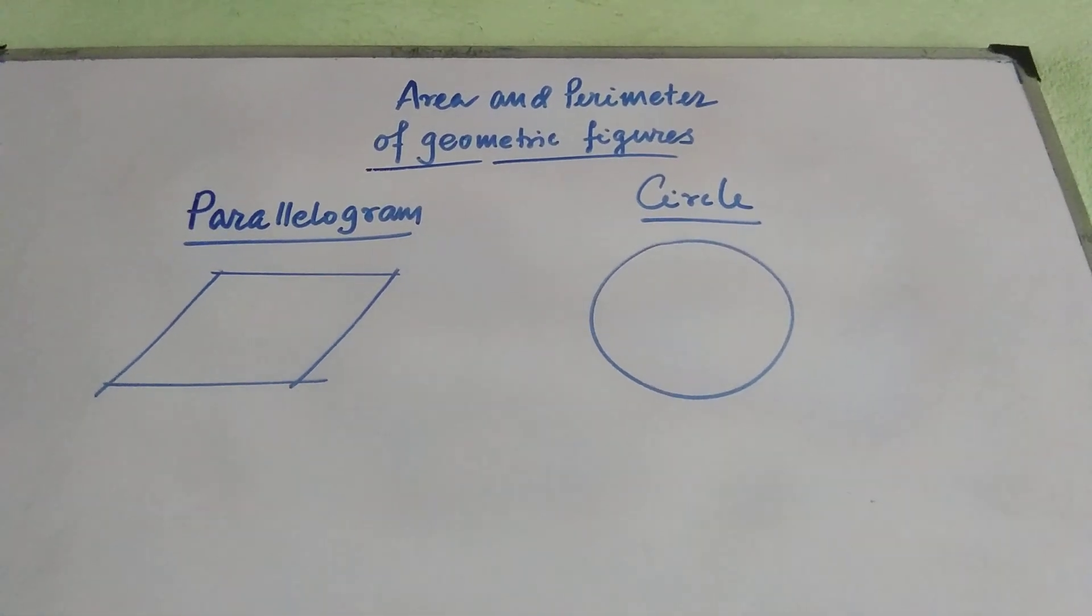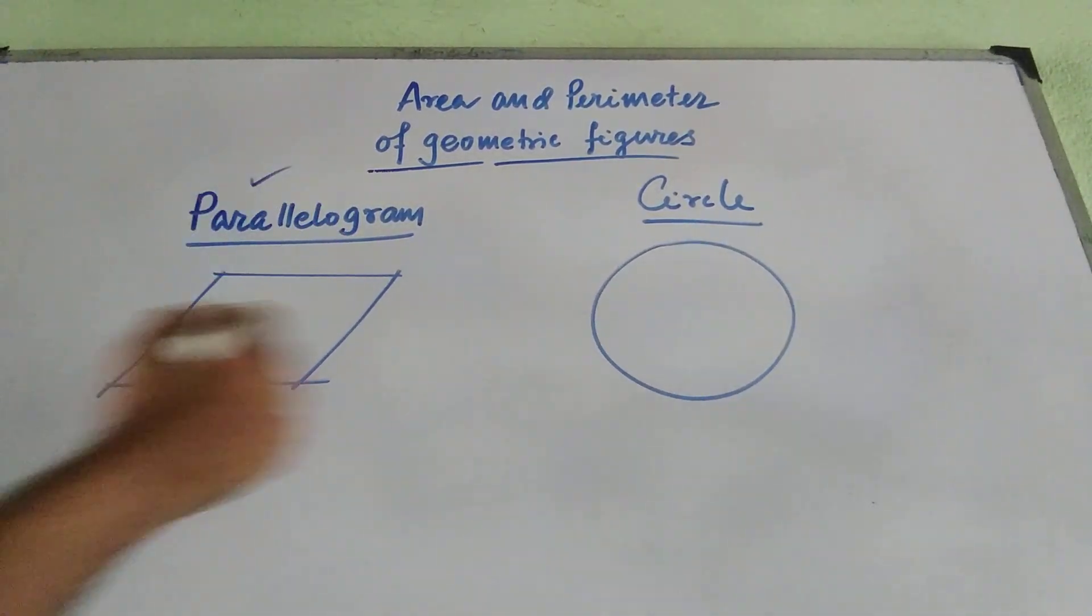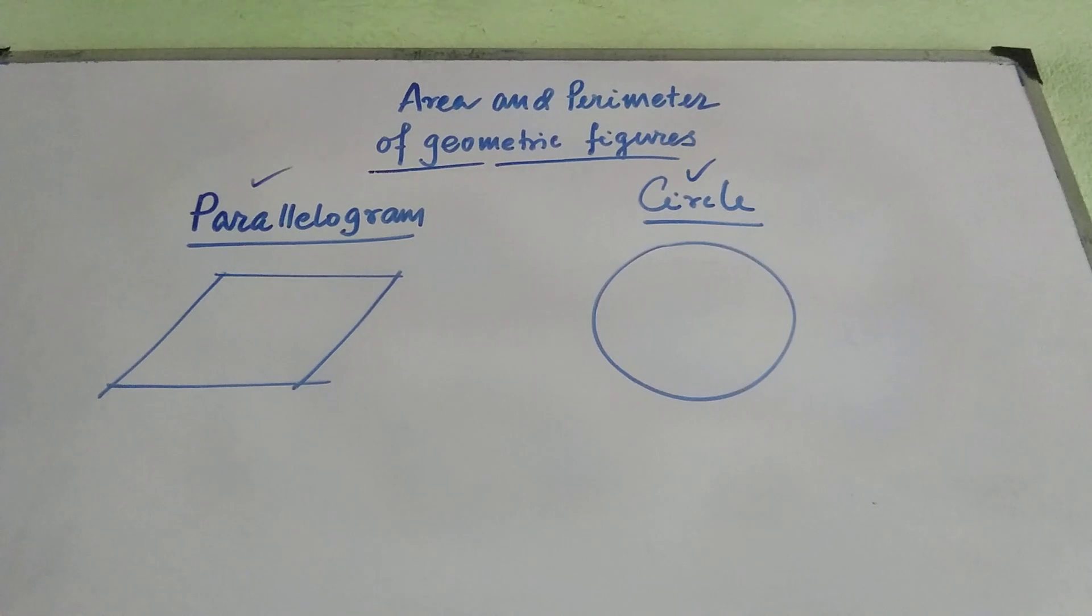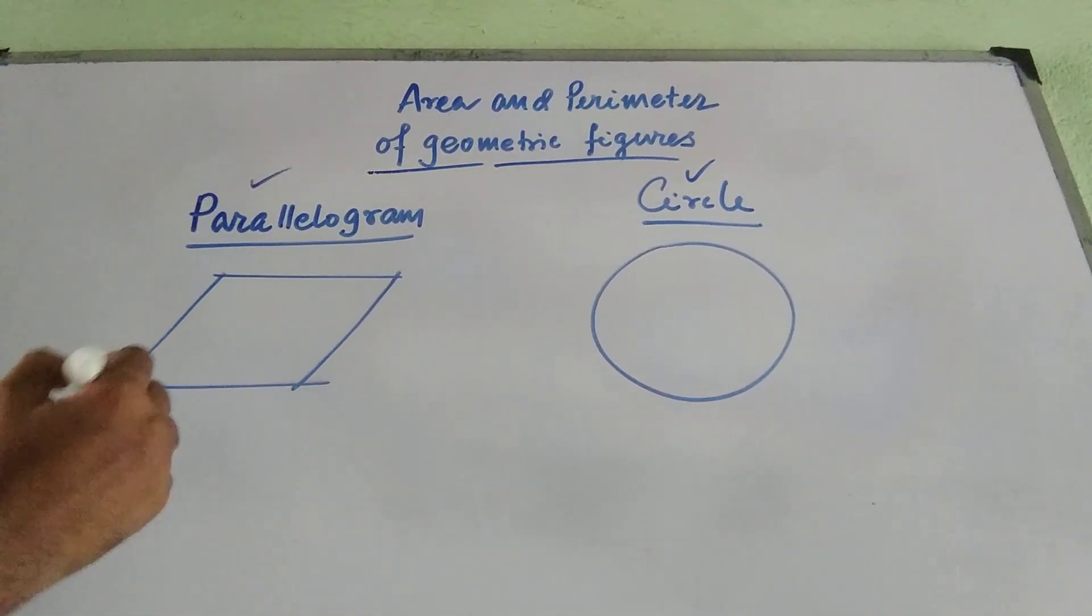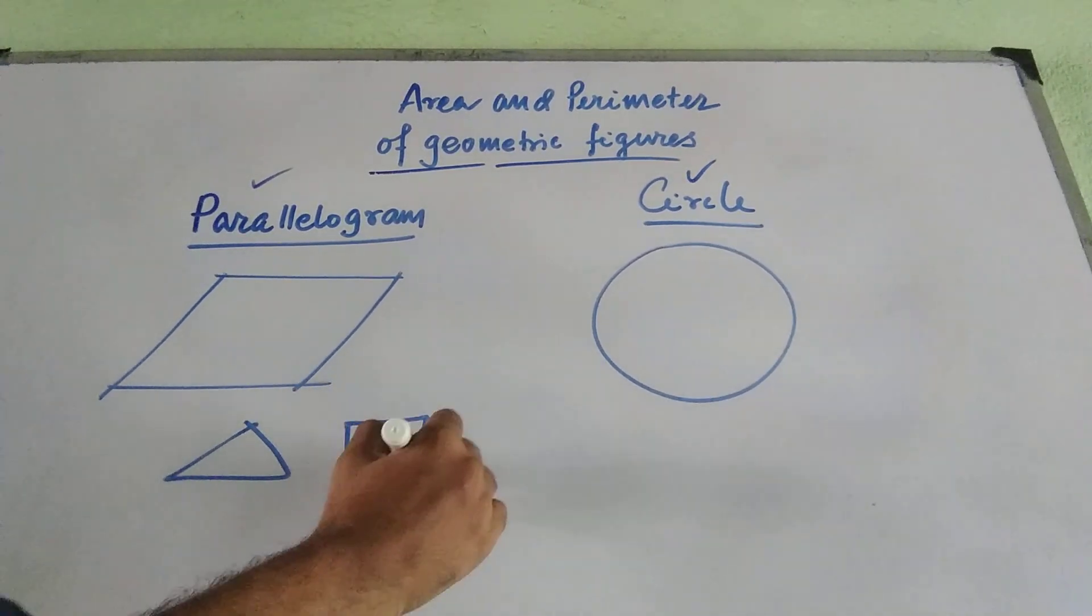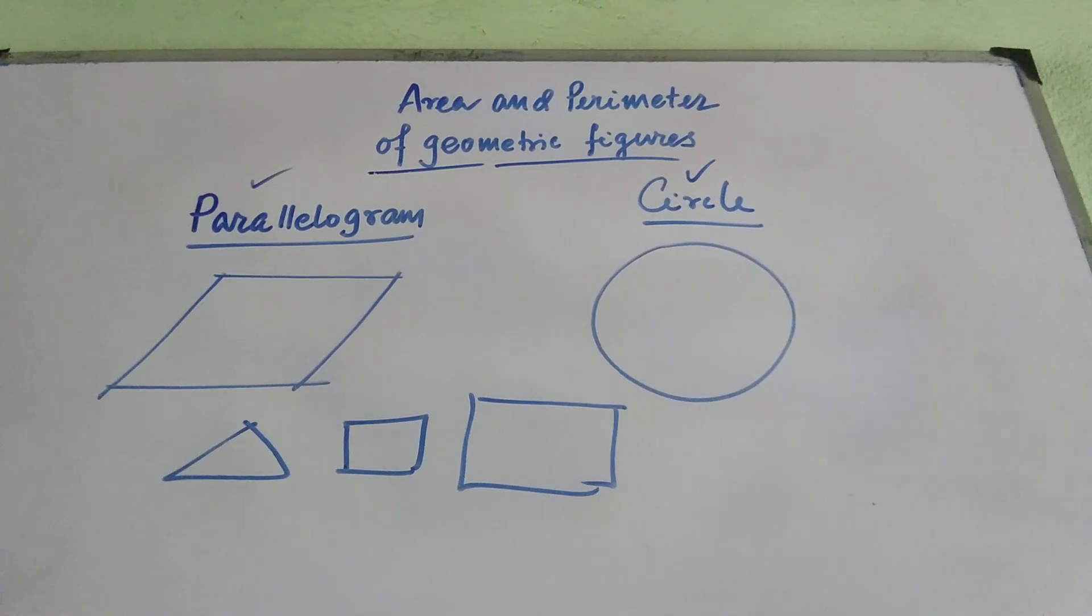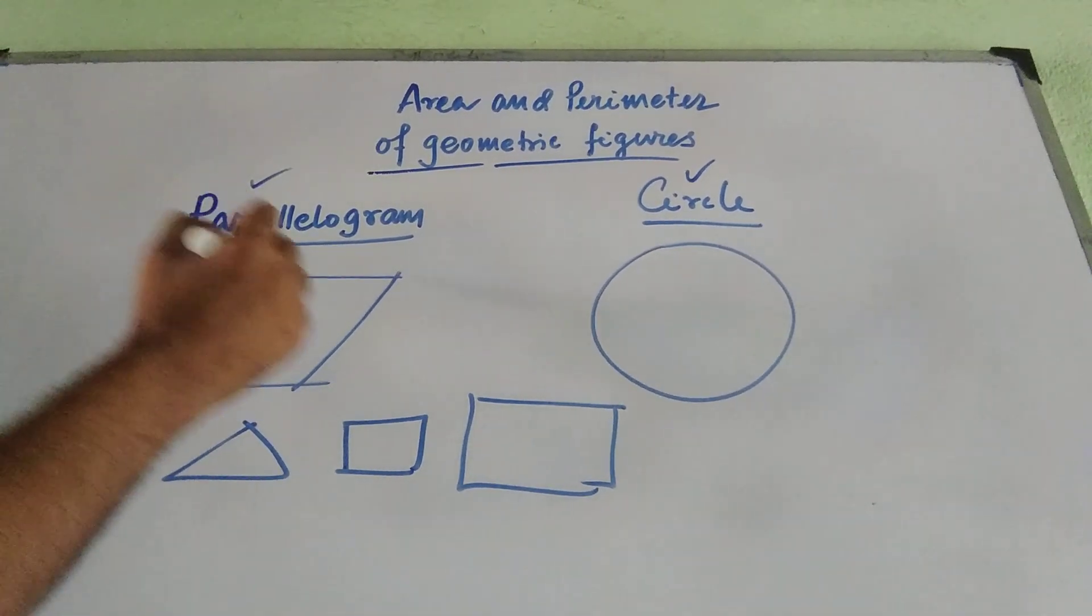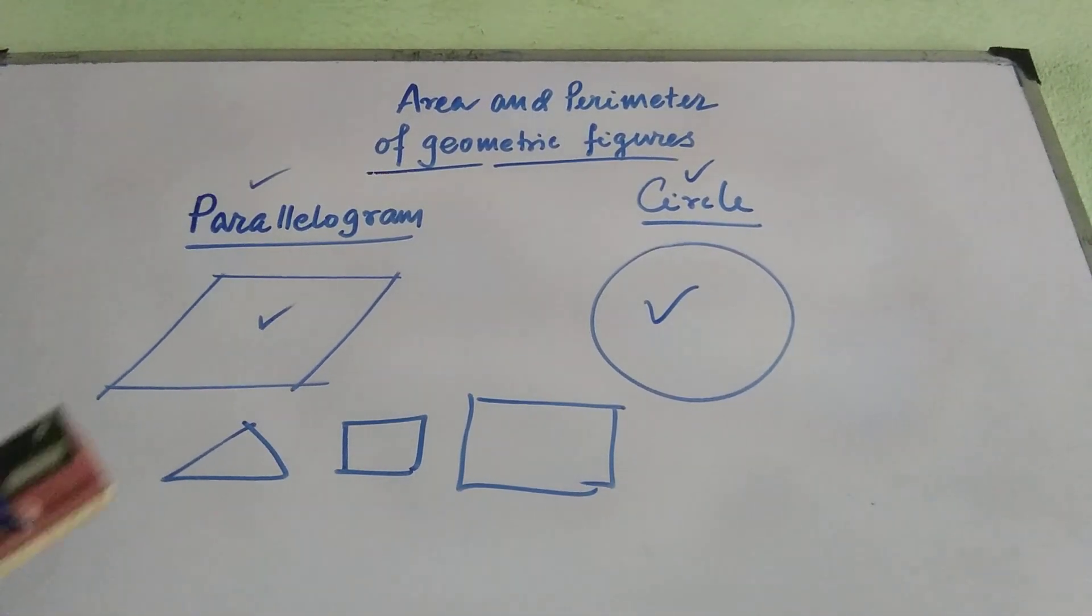Hello everyone, today we are going to discuss a particular topic of geometry. Here I will show you how to find out the area and perimeter of two geometric figures. One is parallelogram and another is a circle. In a previous video I have shown you how to find out the area and perimeter of triangle, a square and a rectangle. In today's discussion I will show you how to derive the area of these two particular figures in geometry. Let us start.